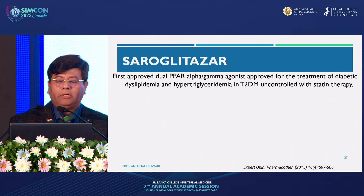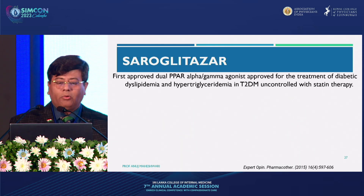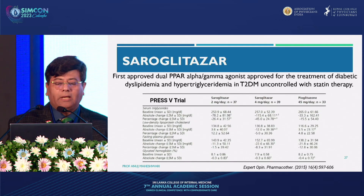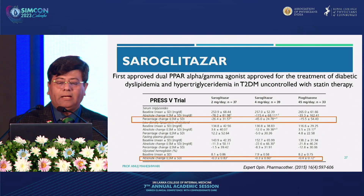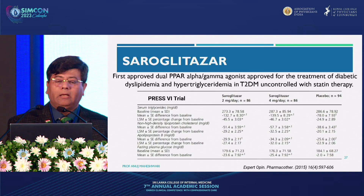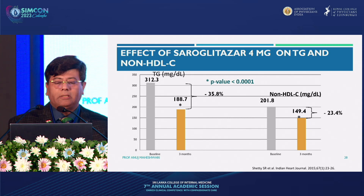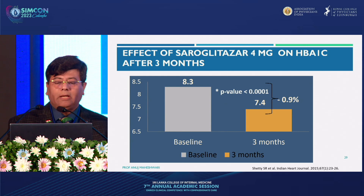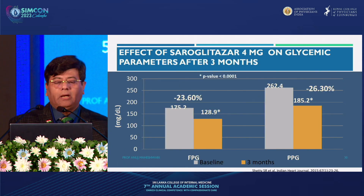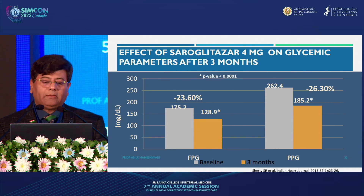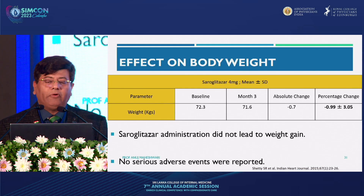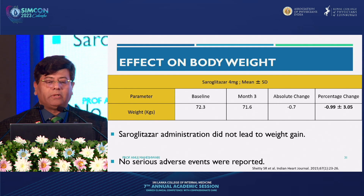Saroglitazar is the first approved dual PPAR-alpha/gamma agonist, approved for the treatment of diabetic dyslipidemia and hypertriglyceridemia in type 2 diabetes uncontrolled on statin therapy. It provides powerful triglyceride lowering and good glycemic control. Proven in the PRESS-5 and PRESS-6 trials, it significantly improves hypertriglyceridemia and also shows significant improvement in glycemic status. Saroglitazar 4 mg showed encouraging effects on triglycerides, non-HDL-C, HbA1c, fasting plasma glucose, and postprandial glucose after 3 months, without causing weight gain or serious adverse events.